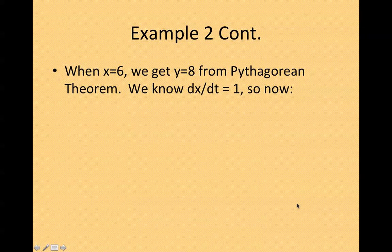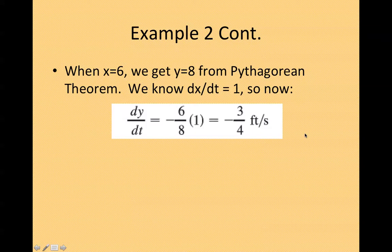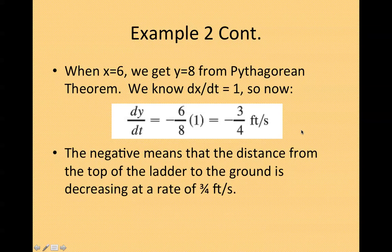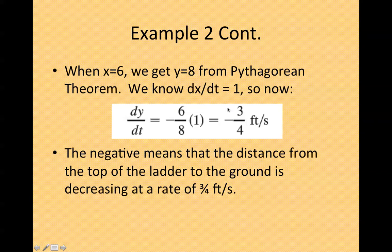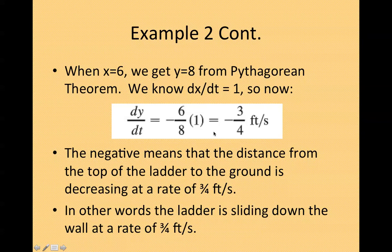Now, we know when x equals 6, we can plug that in and we get 8 for the Pythagorean theorem. Or you can remember that 6, 8, 10 is a Pythagorean triple. So we know that dx/dt is 1. So now, we can show that negative 6 divided by 8 times 1 equals negative 3/4 feet per second. Therefore, the negative means that the distance from the top of the ladder to the ground is decreasing. The ladder is going down. It also says that the ladder is sliding down the wall at a rate of 3/4 feet per second.